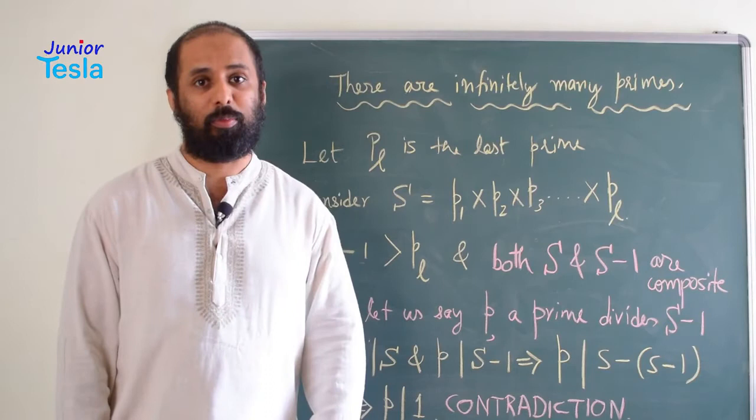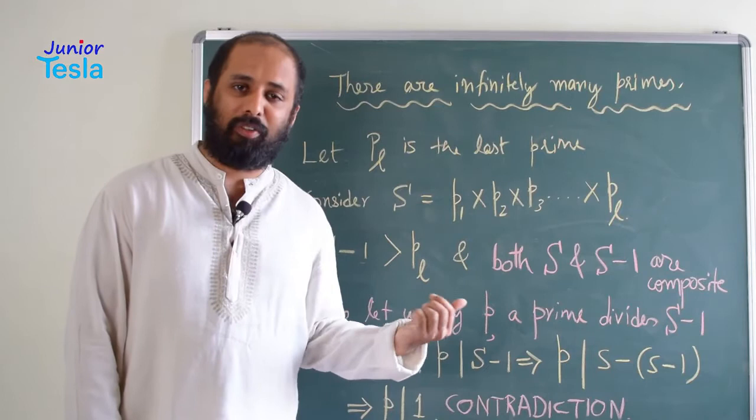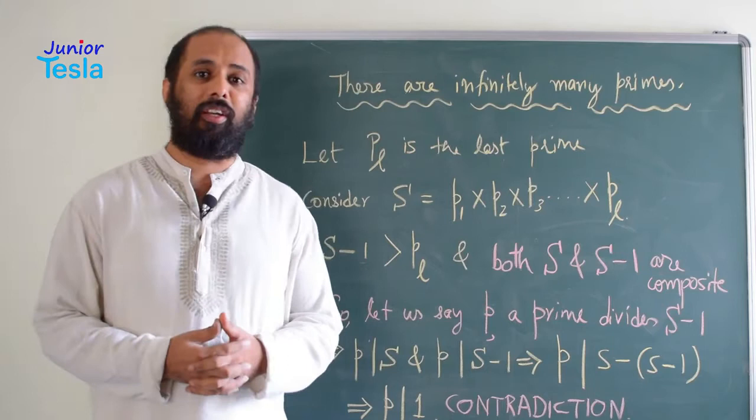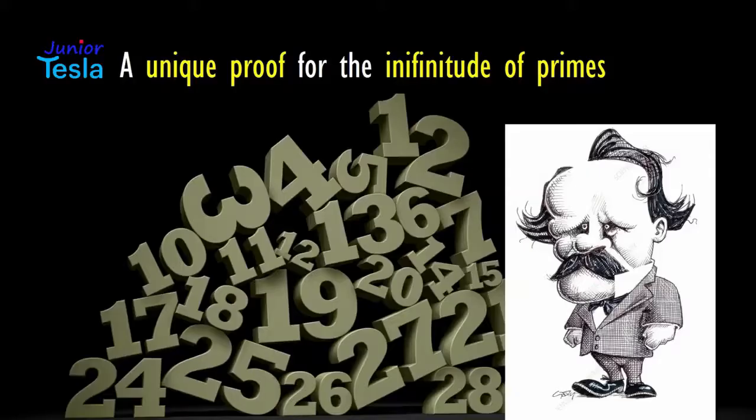In our previous episode of Junior Tesla, we had seen the method given by Euclid to prove there are infinitely many prime numbers. But in this session, we have taken the same result, but we are going to prove it using a different method. The method that is given by a mathematician called Kummer. Let us see how to do it.